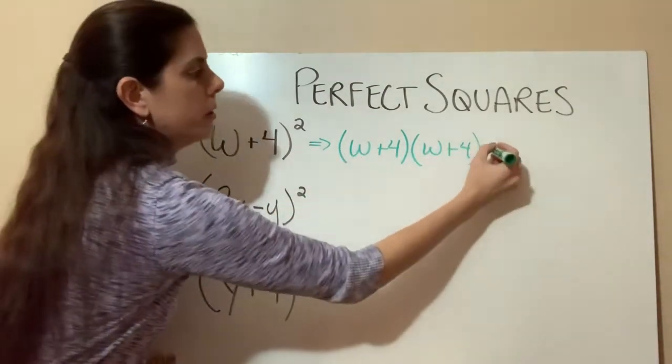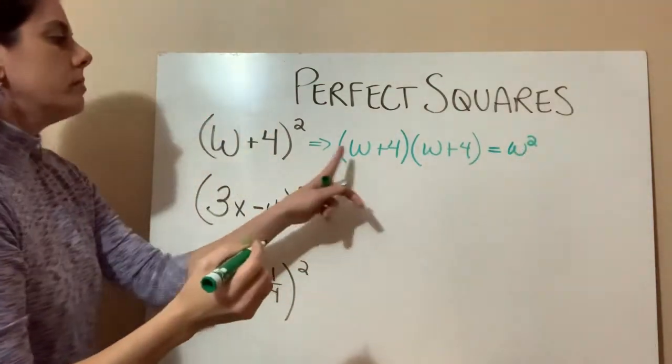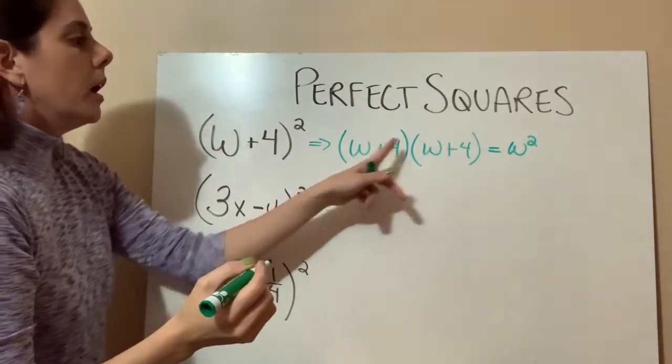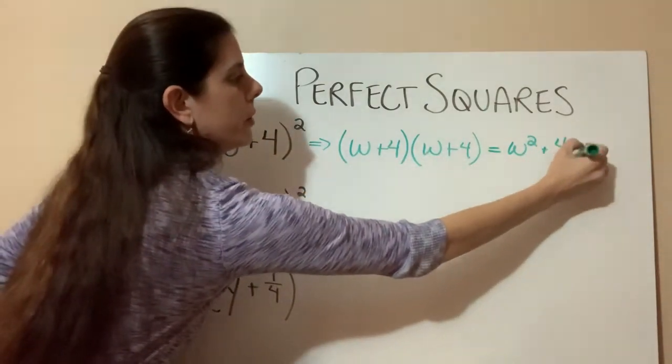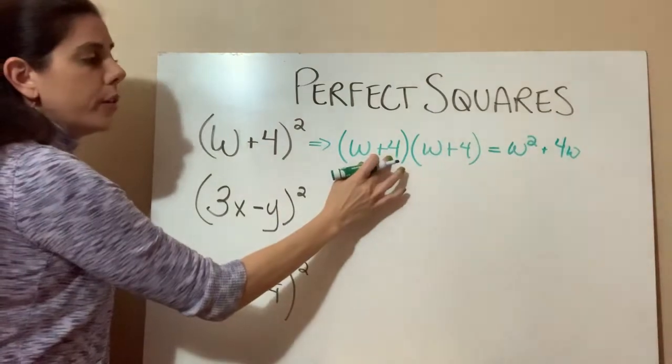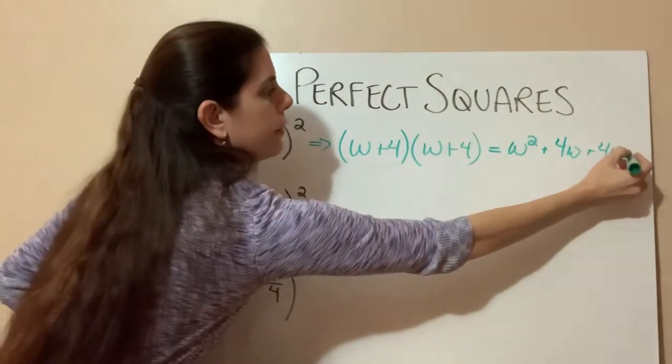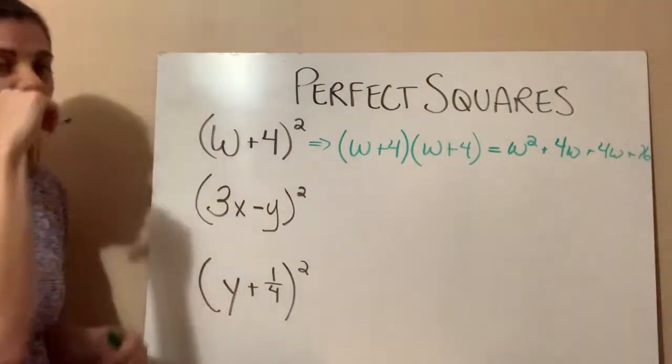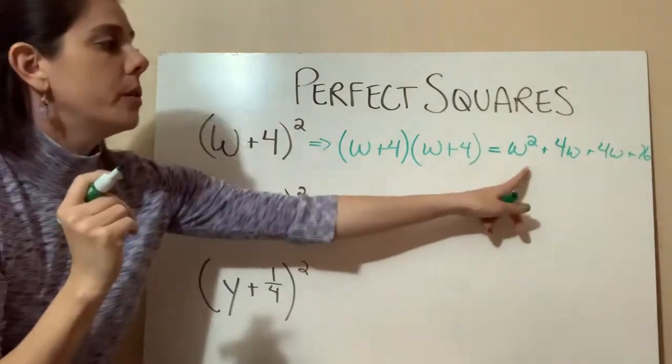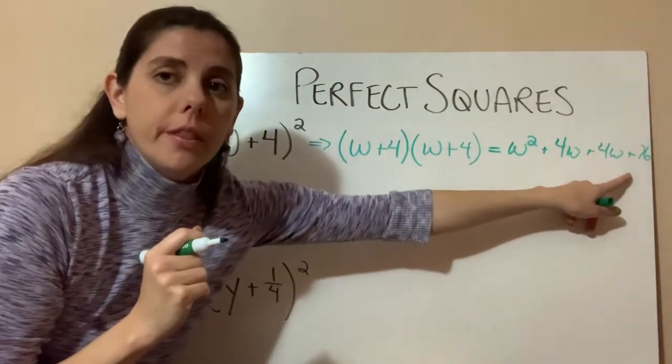Now we know how to go ahead and distribute out this problem. So w times w equals w squared. And then w times the 4 will be a plus 4w. And then again, we have another 4 times a w, which will give us another 4w. And then 4 times 4 is 16. So we have w squared plus 4w plus 4w plus 16 on the very end.